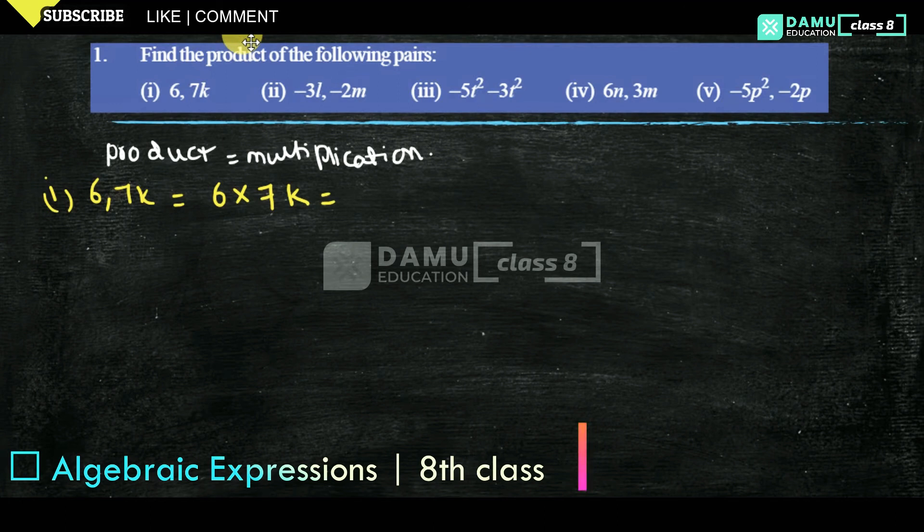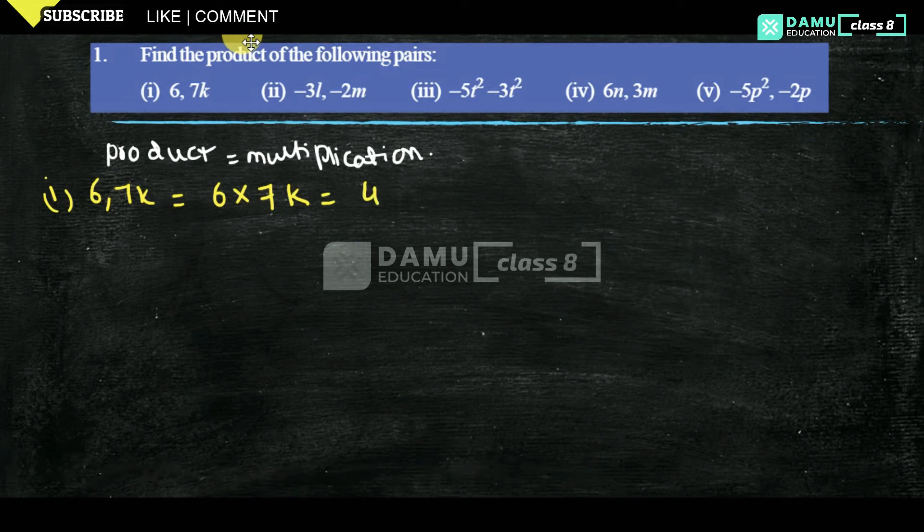So what is that here? So 6 sevens we need to find. Now, so what is that 6 sevens? 42. So first we have to multiply with the numbers and k. 42k. Next one.